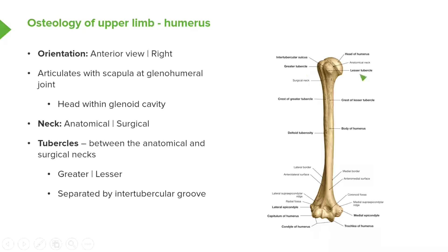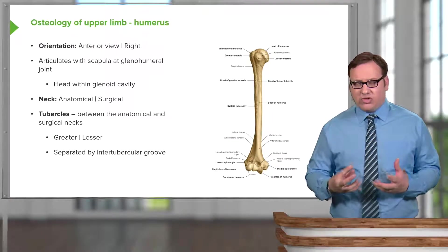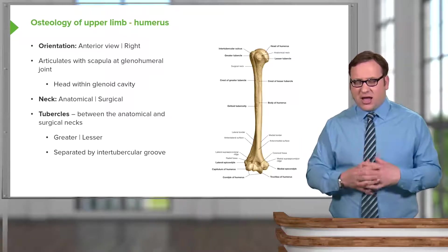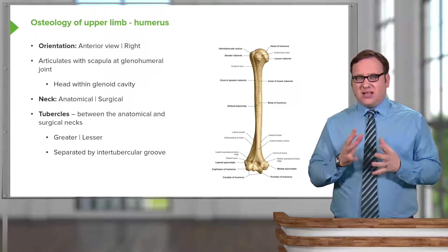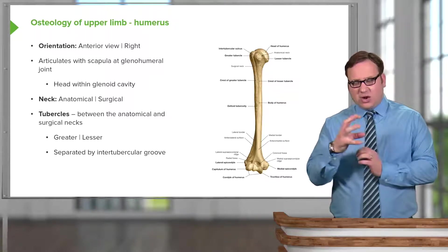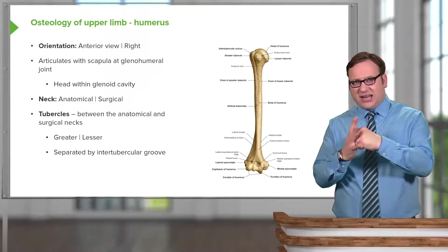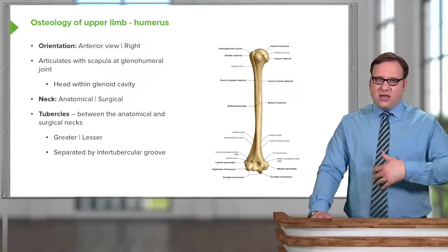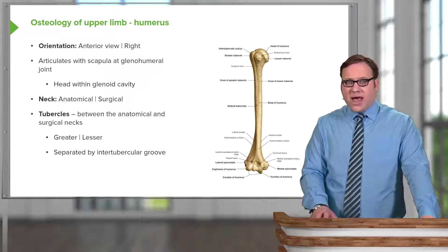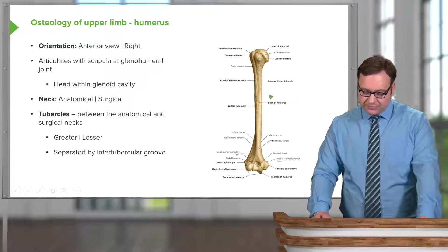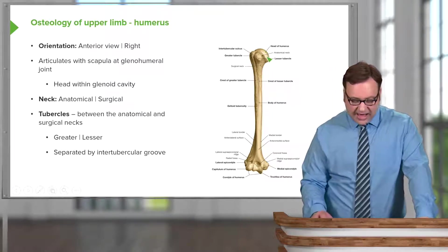I want to concentrate on this proximal region of the humerus up here towards the head of the humerus. We can see that the head is going to articulate within the glenoid cavity to form the glenohumeral joint. The glenohumeral joint is a really mobile joint. The glenoid cavity is very shallow — it's not a cup in which the head sits into it. The head of the humerus sits alongside it, and due to this shallow glenoid cavity, the upper limb is very mobile. We can all move our arm way above our head, and that movement owes itself to the articulation between the head of the humerus and the glenoid cavity.